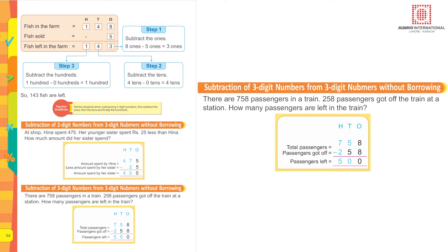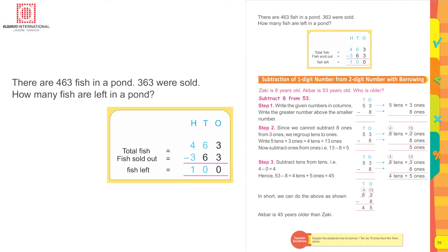Subtraction of three-digit numbers from three-digit numbers without borrowing. There are 758 passengers in a train; 258 passengers got off at a station. How many passengers are left? Total passengers: 758, passengers got off: 258. Eight minus eight is zero, five minus five is zero, seven minus two is five. Passengers left: 500.